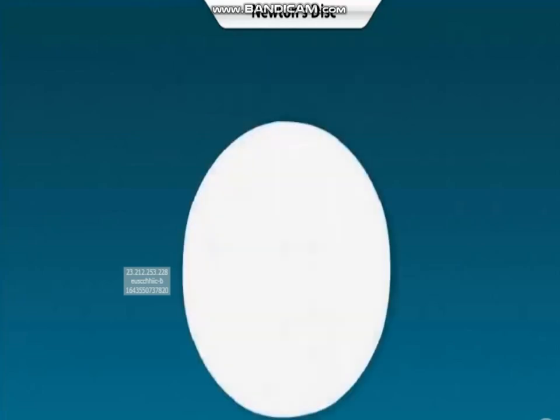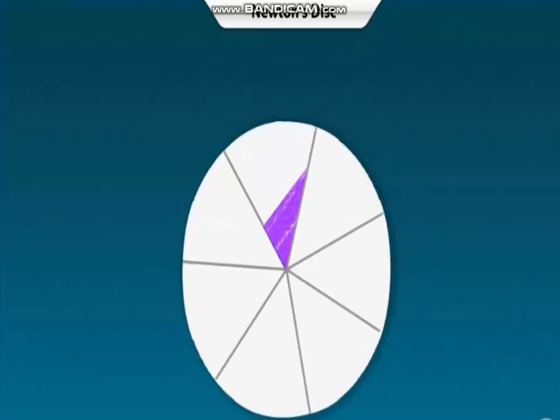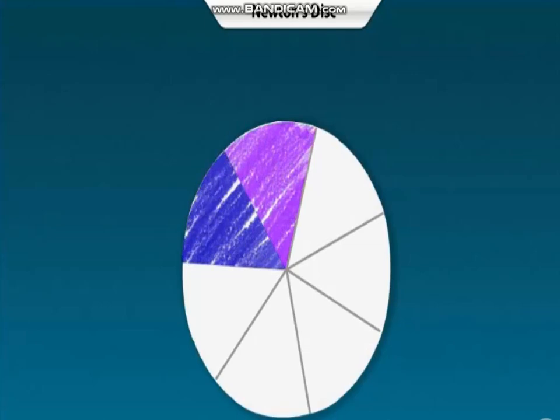Take a paper disc and draw seven sectors on it. Color each sector sequentially with the colors of the visible spectrum.